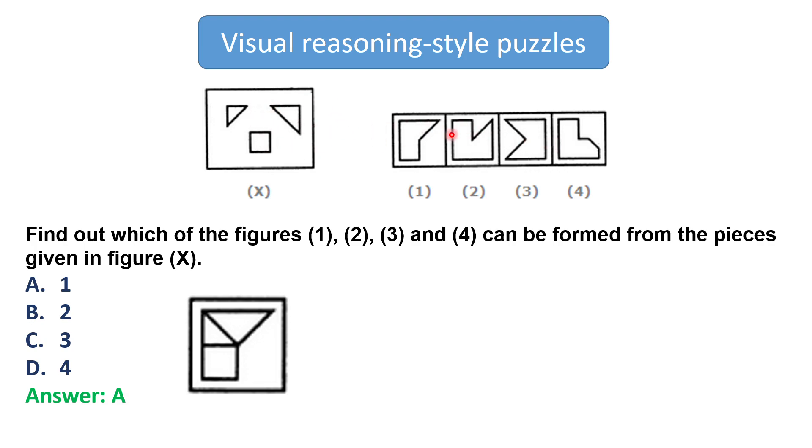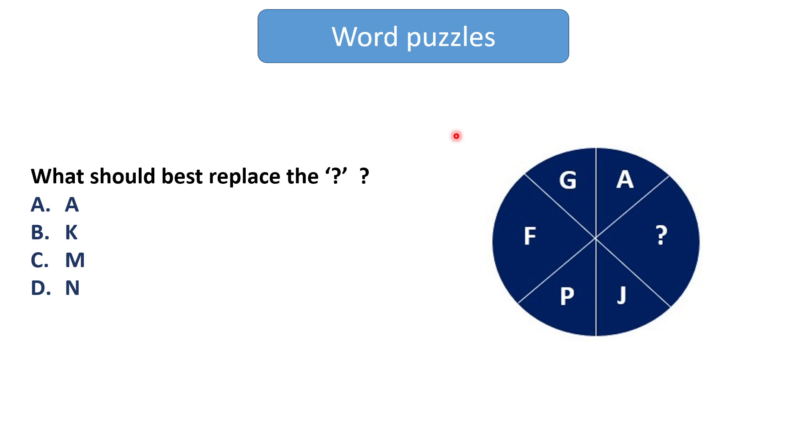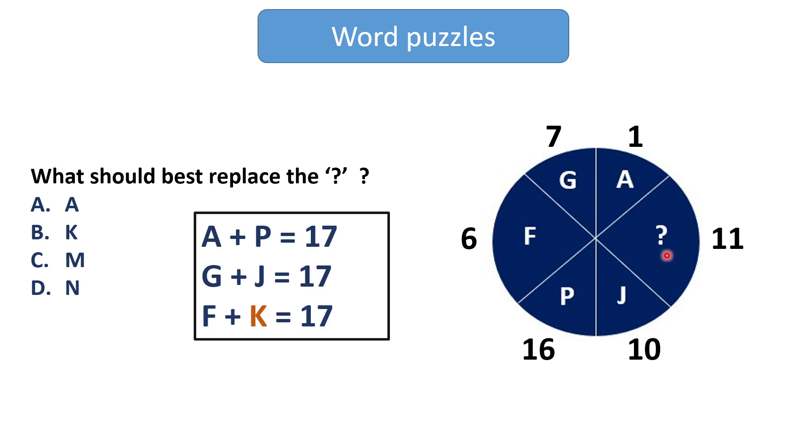Now our last question is from the word puzzles. The question may be something like this where again we have to replace the question mark. If we look at the number places of these alphabets then they will be something like this. If you will look at the figure carefully then you will observe that the sum of the opposite numbers is equivalent to 17. So opposite to 6 we need 11 to make it 17. So 11 is the number place of K alphabet. That's why the answer is K.